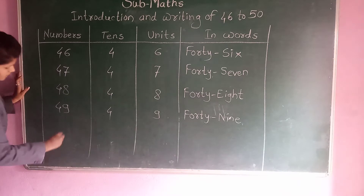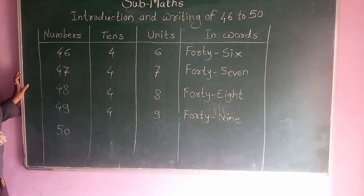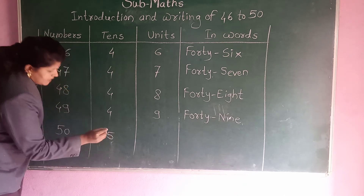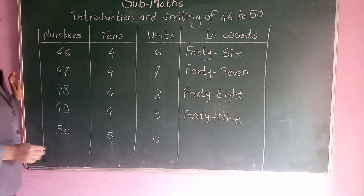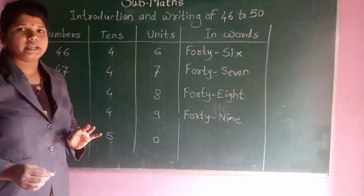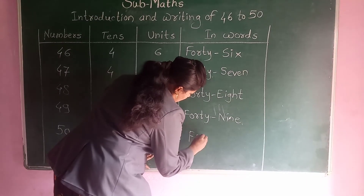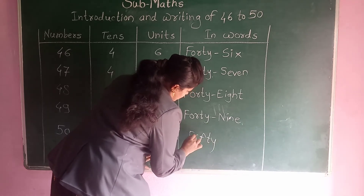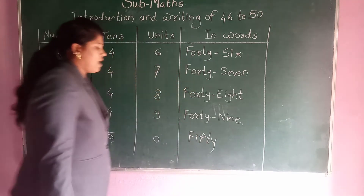Last one, 50. This number's tens and units — 5 is the tens and 0 is the unit. And how to write in words, the spelling for 50: FIFTY — F, I, F, T, Y.